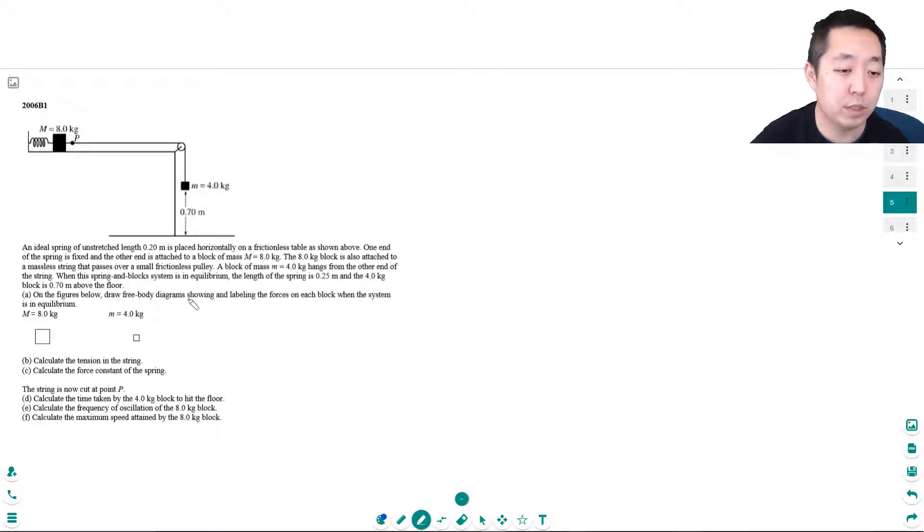On the figures below draw free body diagrams showing and labeling the forces of each block in the system. Okay so for the 8 kilogram block we've got tension pulling out on the right, and what's holding it back is the spring force.